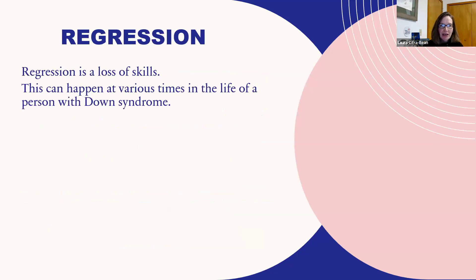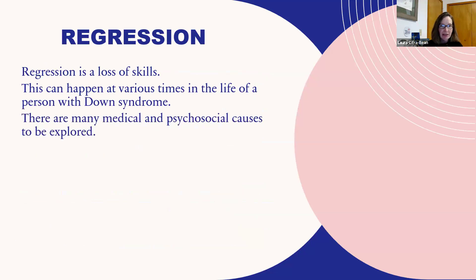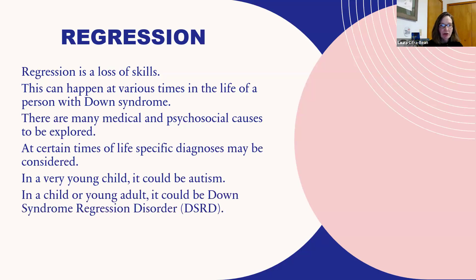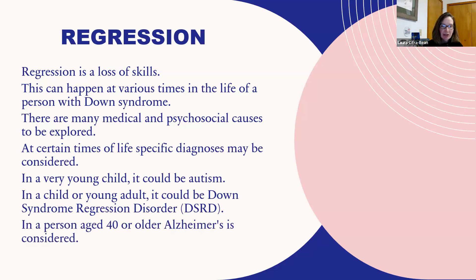Regression is a loss of skills and it can happen at various times in the life of a person with Down syndrome. There are many causes — medical and psychosocial — that have to be explored. In a very young child, one thing people think of is autism. In a child or young adult, it could be Down syndrome regression disorder or DSRD. In a person aged 40 or older, Alzheimer's disease is considered.